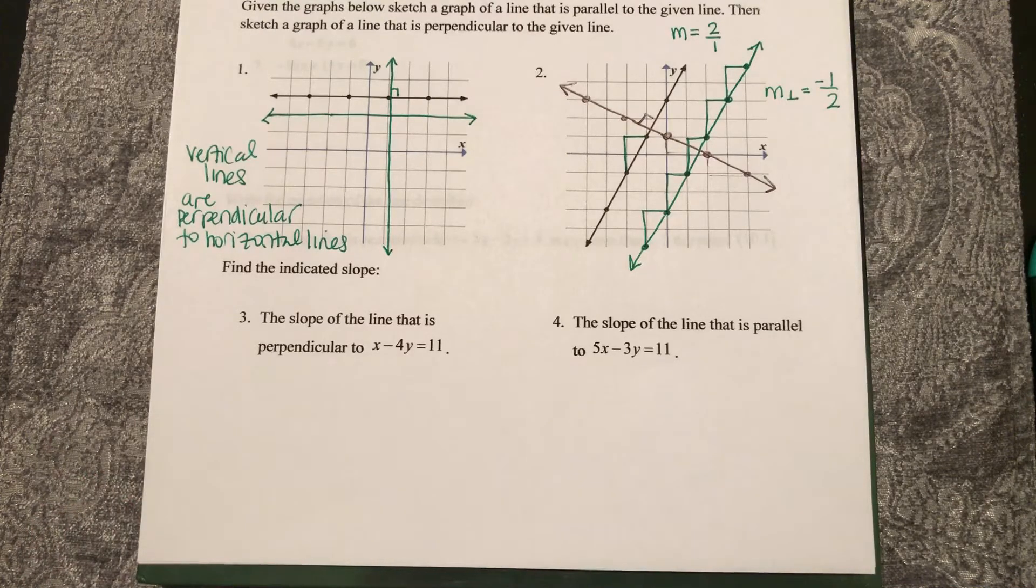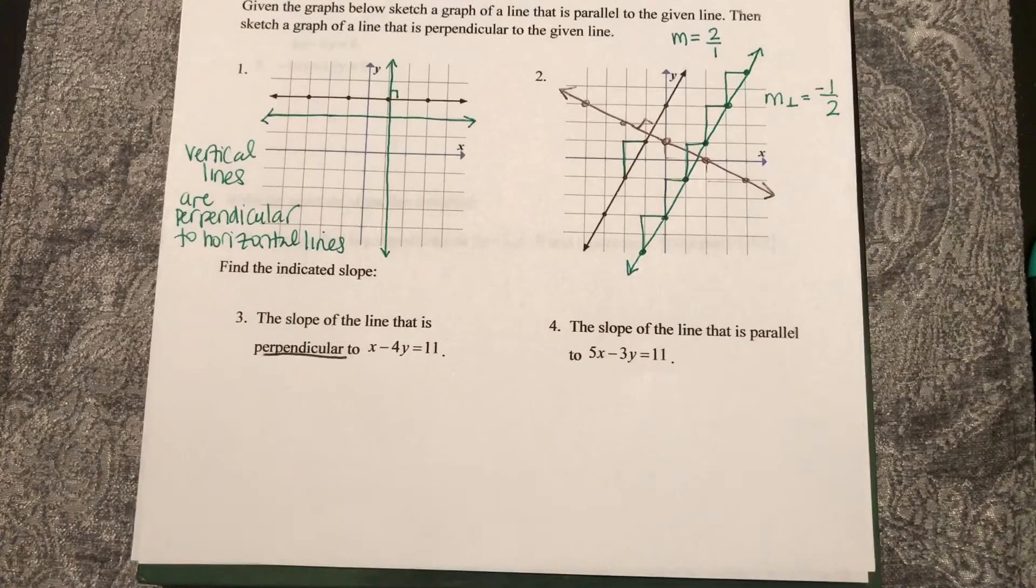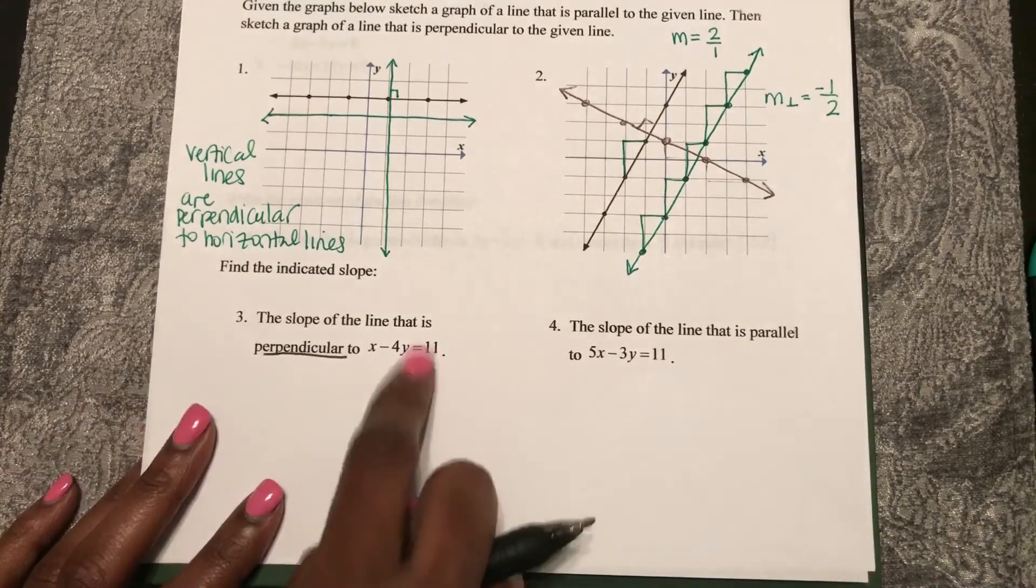So here we want to find the indicated slope. They want the slope of the line that is perpendicular to this line. So first, what is the slope of this line?